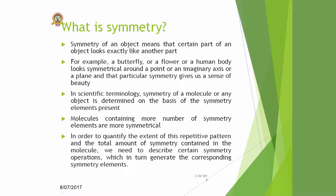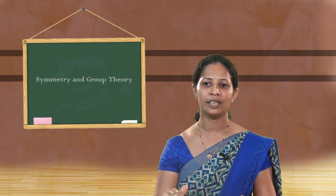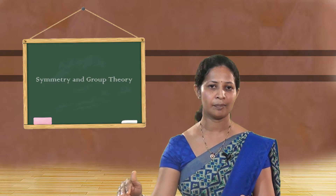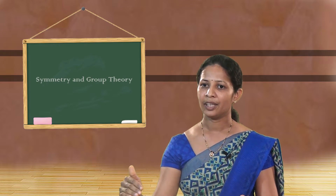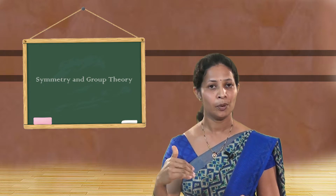Now let us see what symmetry is. Symmetry of an object means that a certain part of an object looks exactly like another part. For example, a butterfly, a flower, or a human body looks symmetrical around a certain point, imaginary axis, or a plane, and that particular symmetry gives us a sense of beauty. In scientific terminology, the symmetry of a molecule or any other object is determined on the basis of the symmetry elements present. Molecules containing more symmetry elements are more symmetrical.